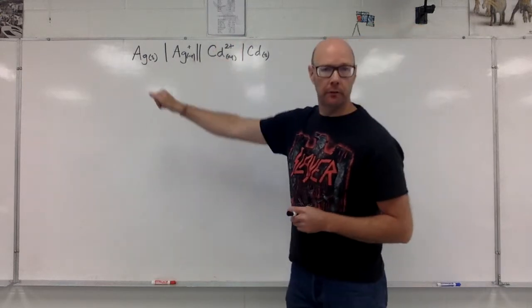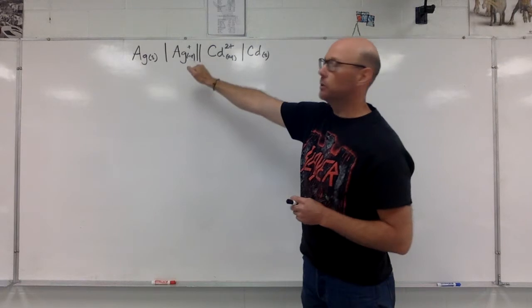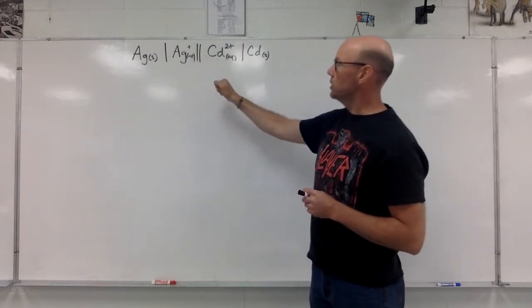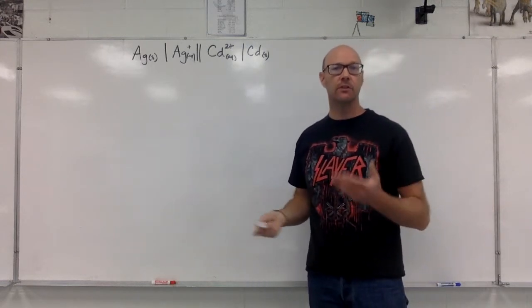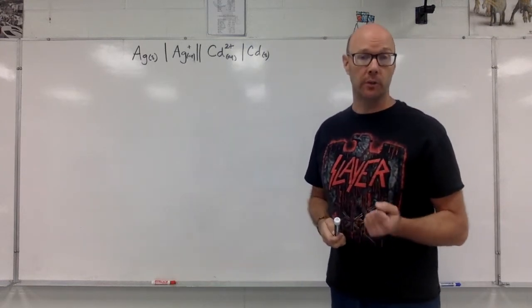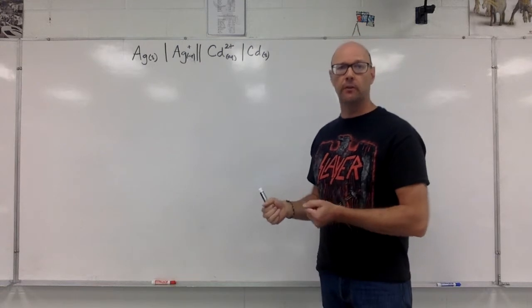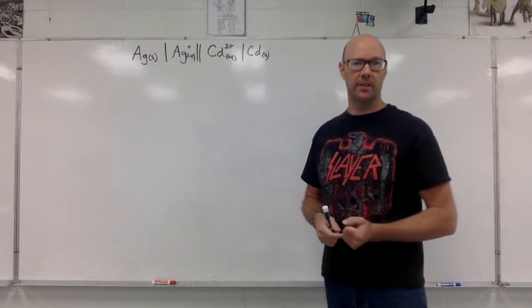I have a silver electrode, silver ions, then the salt bridge, cadmium 2 plus ions, cadmium solid. The notation is given to me, maybe I even had to work out the notation myself, from this silver cadmium voltaic cell.